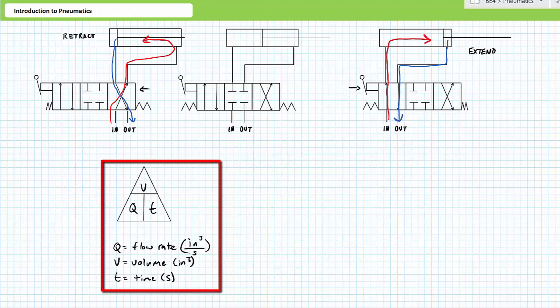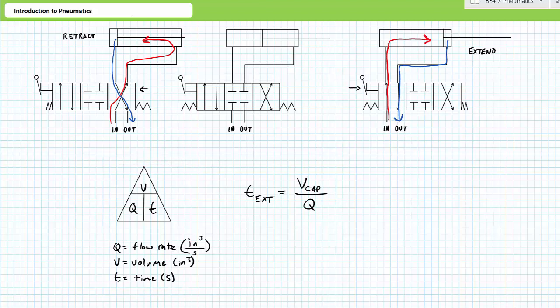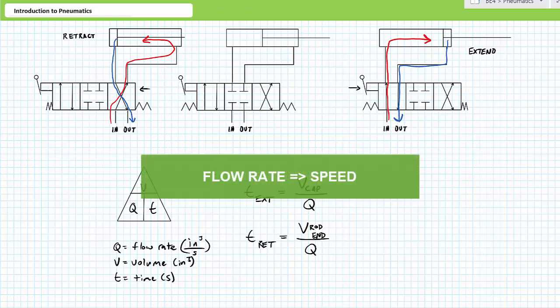Lastly, actuator speed is dependent upon flow rate. Flow rate Q is a measure of volume per unit time. To calculate extension time, one would divide the full cylindrical volume of the cap end by the incoming flow rate. Similarly, to calculate retraction time, one would divide the smaller tubular volume of the rod end by the incoming flow rate. Any increase in flow rate or decrease in volume results in shorter extension and retraction times. Conversely, any decrease in flow rate or increase in volume results in longer extension or retraction times. In summary, flow rate determines the speed of a fluid power system. This is true for both hydraulic and pneumatic systems.